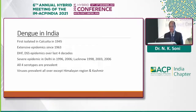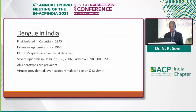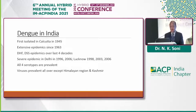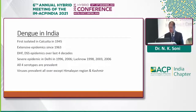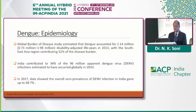In India, dengue was first isolated way back in 1945. There have been many epidemics of dengue hemorrhagic fever as well as dengue shock syndrome, even in Delhi and Lucknow. All four serotypes are prevalent. The virus is prevalent all over India except in the Himalayan region and Kashmir.